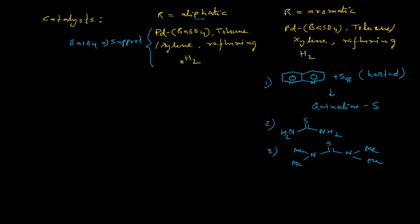In case of aliphatic, when R is aliphatic, we don't need this kind of modifiers because here barium sulphate itself acts as a modifier. Due to that reason, the reaction basically stops after the formation of aldehyde in case when R is aliphatic. But in case of aromatic, when R is aromatic, we need this kind of modifiers.